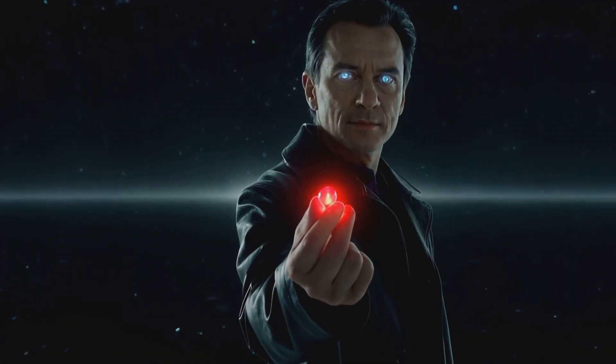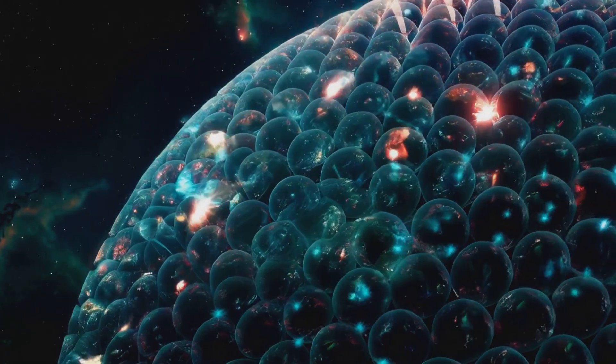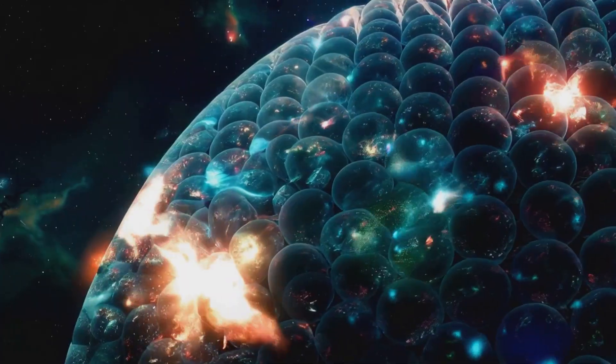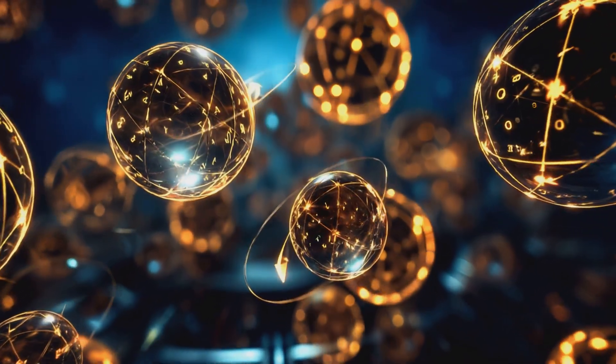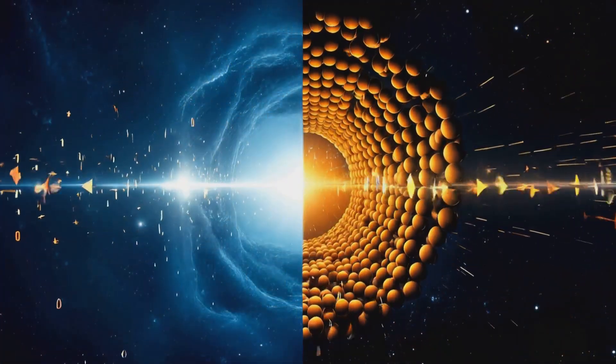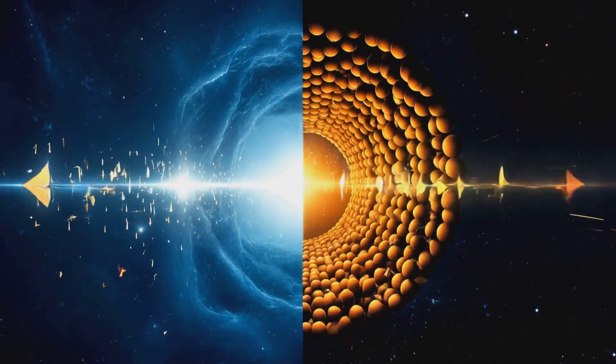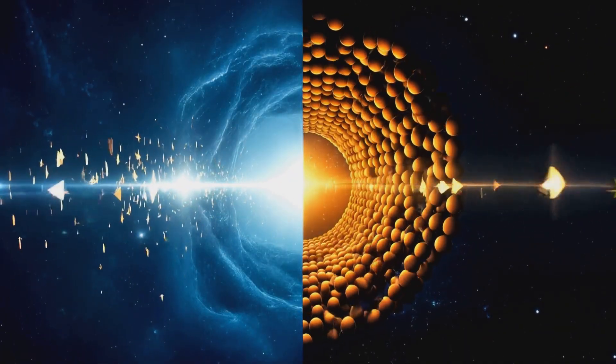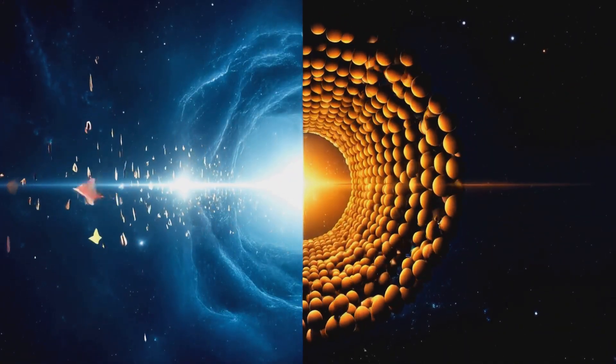The event horizon is no ordinary boundary. It is a vast holographic screen composed of Bloch spheres, qubits spinning with infinite precision. When a qubit in the singularity collapses into a zero, its entangled twin on the event horizon collapses into a one, and vice versa.